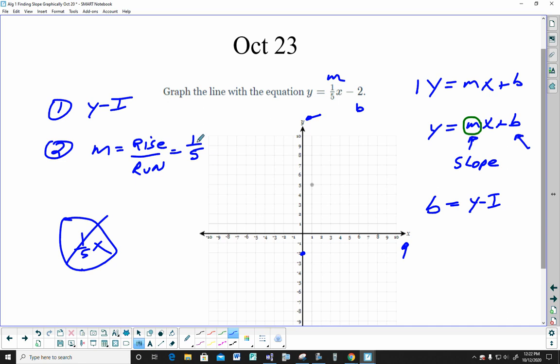From there, rise 1, run 5. Rise 1, run 5. There's your dot. And then you draw your line. Now, in delta math, it'll draw it for you, but I'm just saying. Put the y-intercept on first. Then go up 1 over 5.